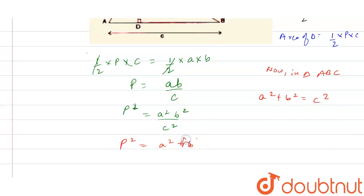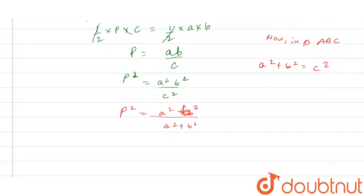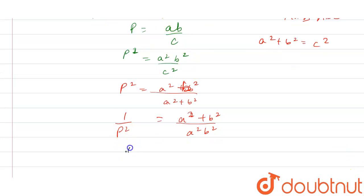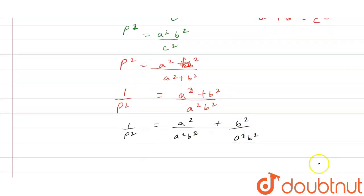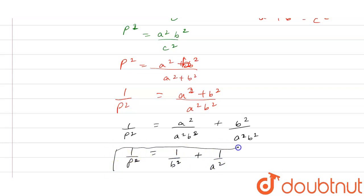Now by reciprocating these terms, we get 1/p² equals (a² + b²) divided by a²b². So the value of 1/p² equals a² divided by a²b² plus b² divided by a²b², which simplifies to 1/b² plus 1/a². Hence proved.